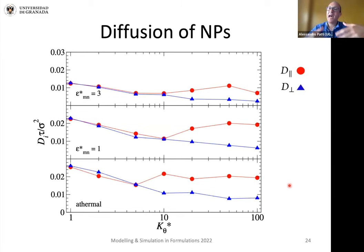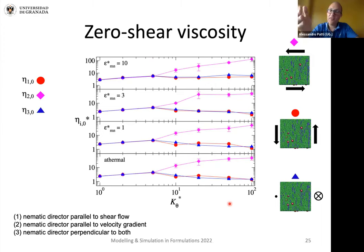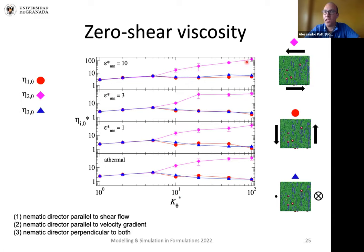Is this anisotropy also affecting the macroscopic response of the material? The answer is yes, as we can see when we compute the zero-shear viscosity. In an isotropic phase it makes no difference which direction shear is applied, but in the nematic phase, the resistance to flow becomes very large when shear is applied perpendicular to the nematic director, and the zero-shear viscosity increases with increasing chain stiffness. The other two possible flow directions do not show any significant difference between them, nor a relevant difference from what we observe in the isotropic phase.